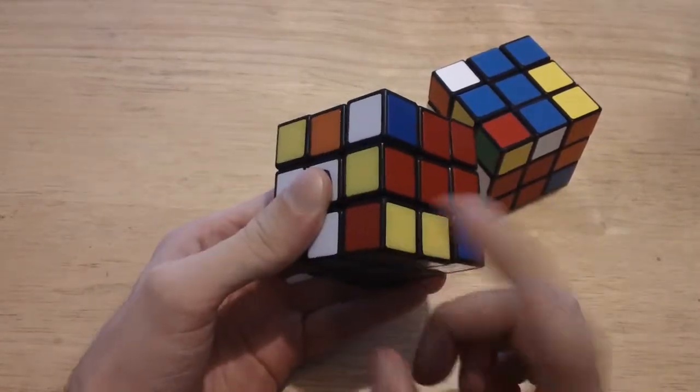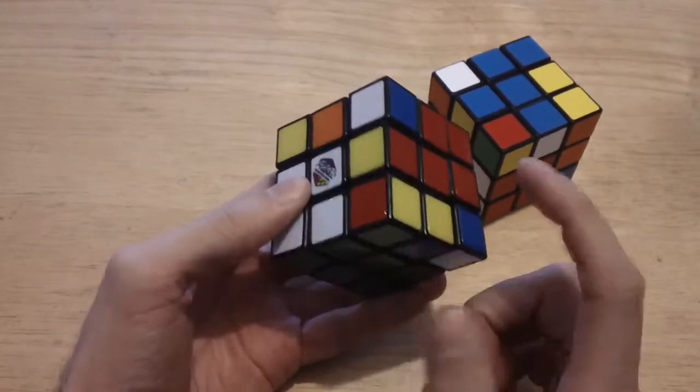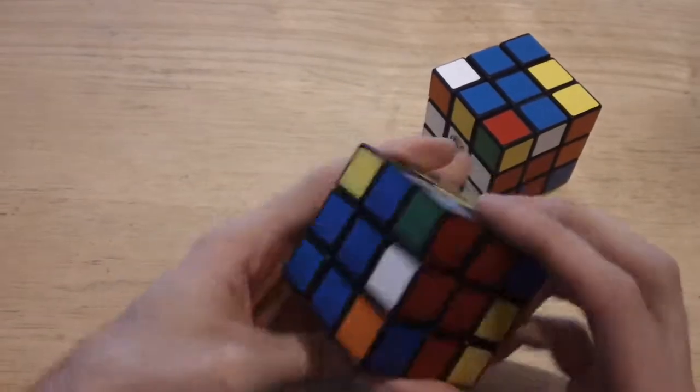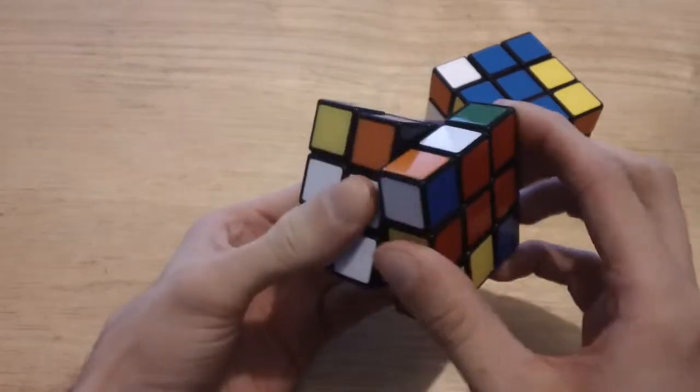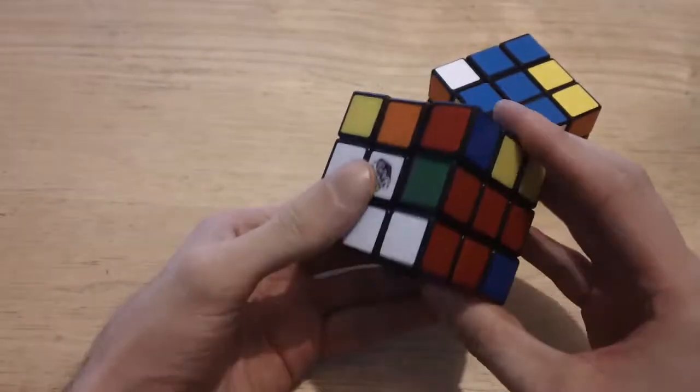We're going to work with the corner first. It's going to be the white-green-red piece, and it is right here. Move that into position. Looking good.